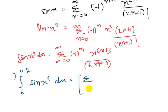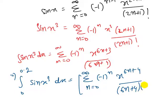So this will equal sigma n equals 0 to infinity, minus 1 raised to power n, x raised to power 6n plus 4, over 6n plus 4 times 2n plus 1 factorial, from 0 to 0.7.